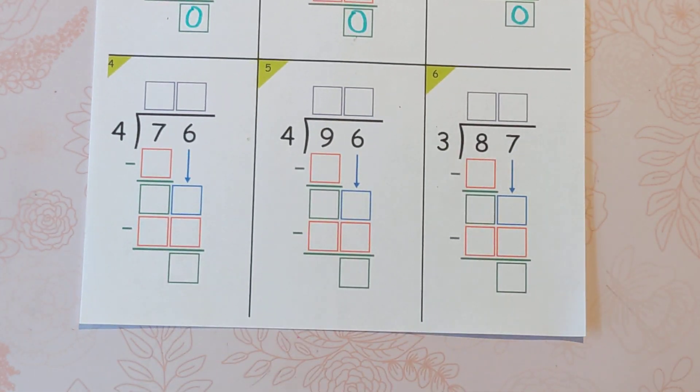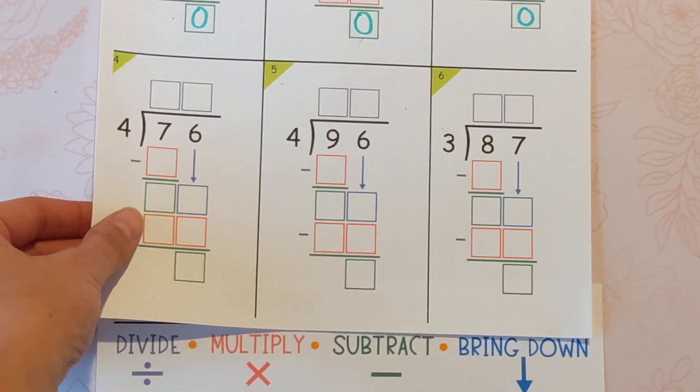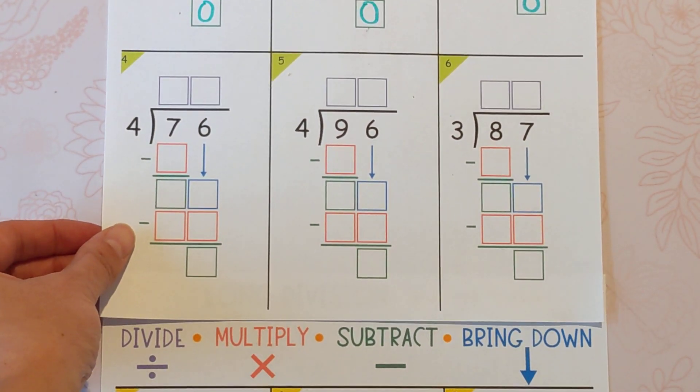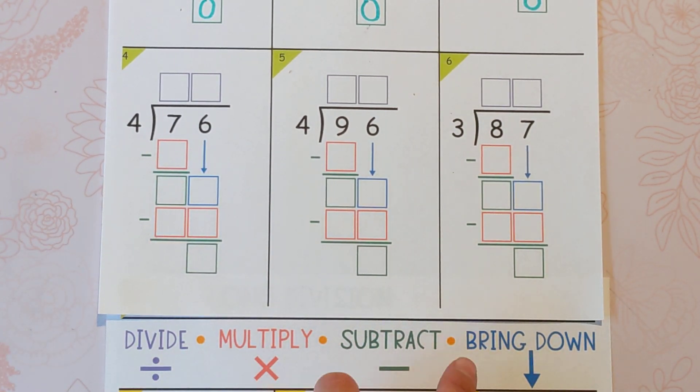And since we can't see them down here, I'm going to put this other one right underneath there. So the way that I remember the steps is DMSB, or does McDonald's subtract burgers? That would be odd.